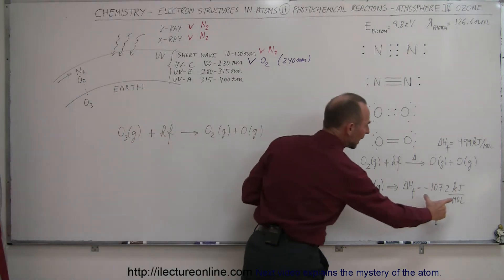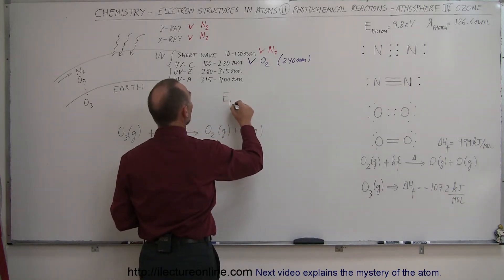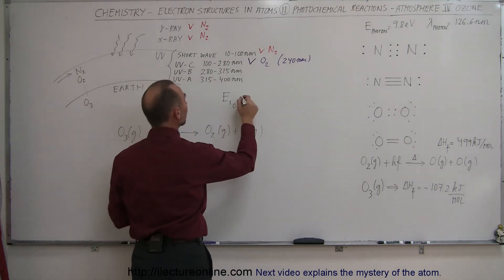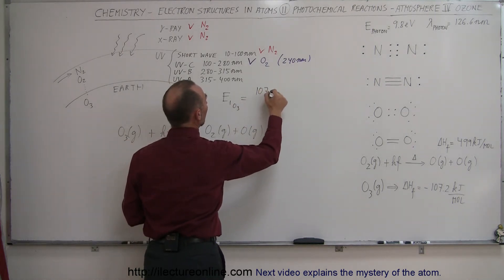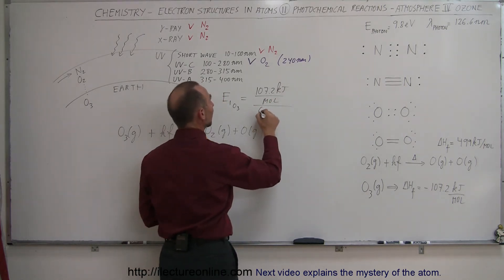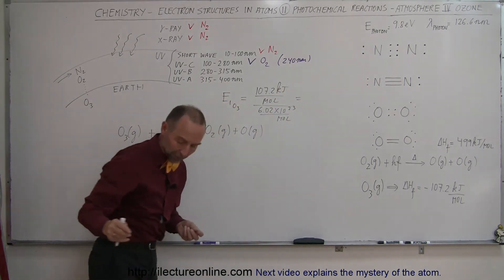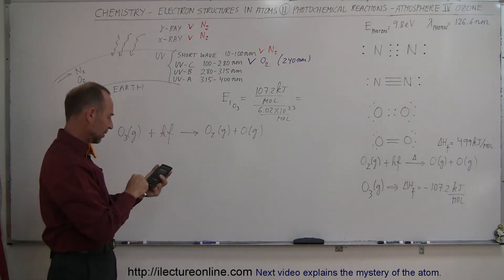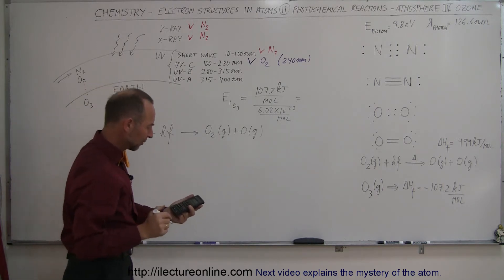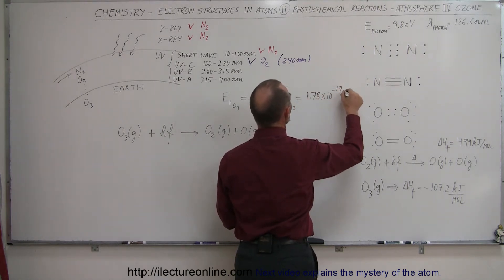We're going to take the energy per mole and convert it to energy per molecule. The dissociation of an O3 molecule takes 107.2 kilojoules per mole. If we divide that by Avogadro's number, 6.02 times 10 to the 23 per mole, we get the energy per molecule. So 107,200 divided by 6.02e23 gives us 1.78 times 10 to the minus 19 joules.